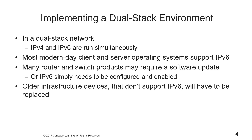When we talk about implementing a dual stack environment, a dual stack network means that IPv4 and IPv6 are running simultaneously. When you're looking at transitioning from IPv4 to v6, this is the most preferred method to make that transition. Most modern-day client and server operating systems have supported v6 since late 2007, and in most cases now it's enabled by default.